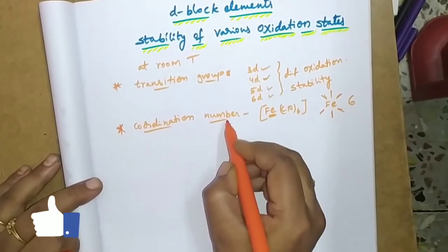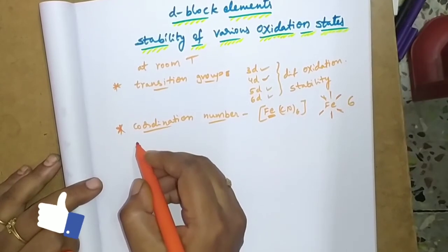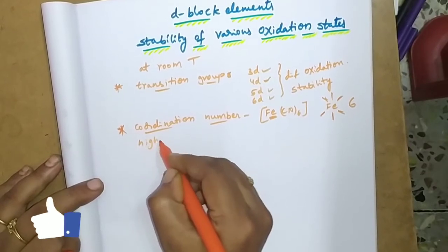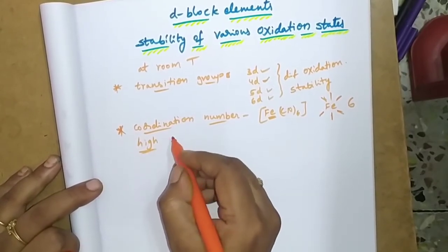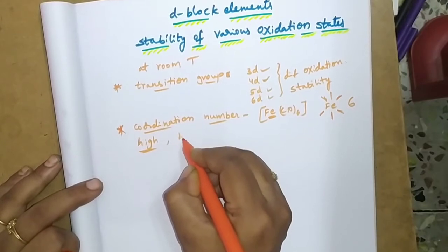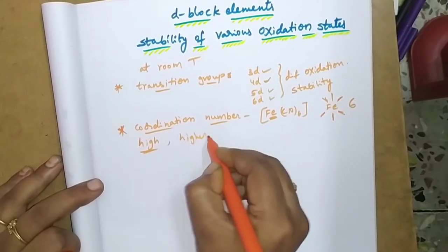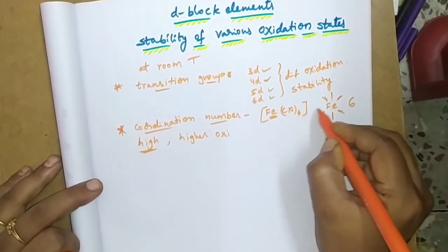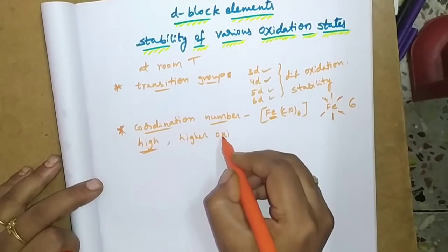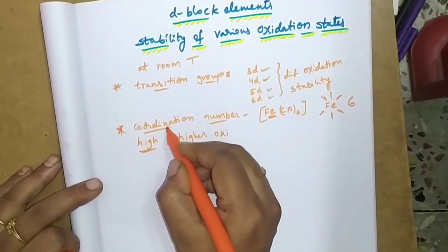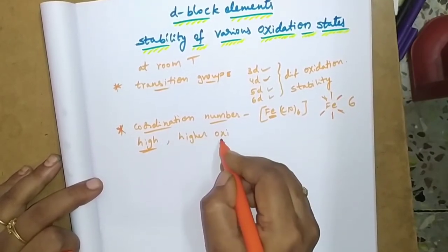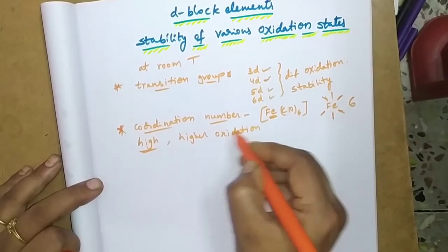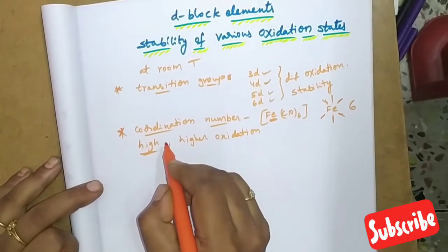They have higher oxidation also. If we have coordination number of 6, that means 6 bonds have to be formed, the capability of 6 bonds, maybe plus 6, because we have higher oxidation state. So higher coordination number obviously follows. Coordination number is higher, oxidation number is higher. Oxidation number is higher, coordination number is higher.